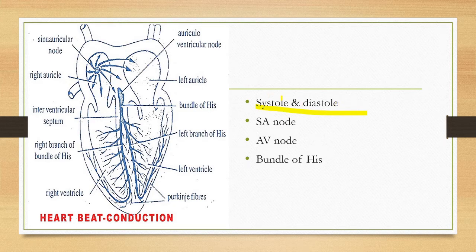When the auricle relaxes, it is called auricular diastole. When the auricle contracts, it is called auricular systole. Similarly, when the ventricle contracts, it is called ventricular systole, and when the ventricle relaxes, it is called ventricular diastole.